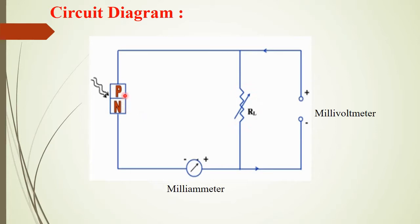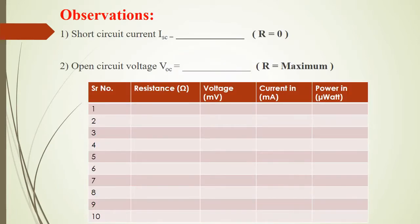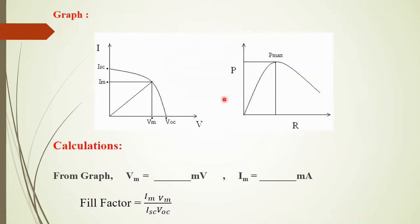After that, we will vary the load resistor between zero to maximum and note down the voltage across the cell and the current. This is the observation table. First, we will determine the short-circuit current by keeping R equal to zero ohms. Then we will determine the open-circuit voltage by keeping R at its maximum value. Then we will vary the resistance between zero to maximum, noting voltage and current. Finally, we will calculate the power in microwatts and plot the graph of VI characteristics.